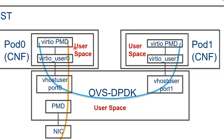The other kind of traffic is between different ports, marked in blue. Suppose port 0 sends traffic to port 1, which also runs CNF inside. Port 0 puts packets into the shared memory of port 0 and OVS-DPDK. OVS-DPDK then copies packets into the shared memory of port 1 and OVS-DPDK, and port 1 polls packets from that shared memory through the VHOST PMD.